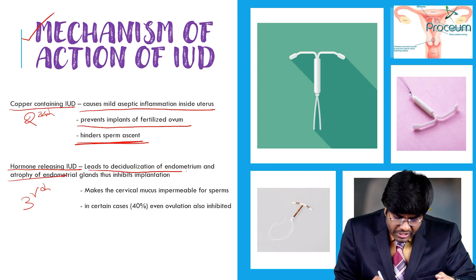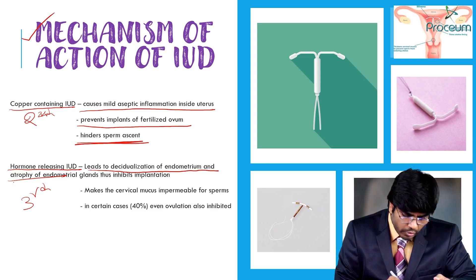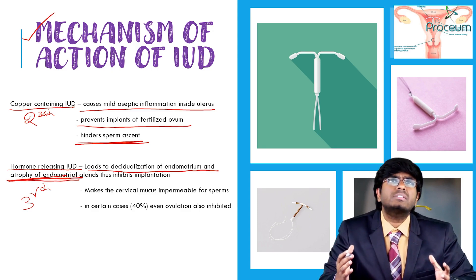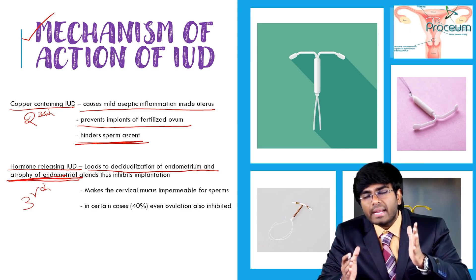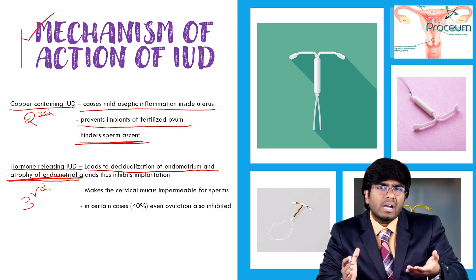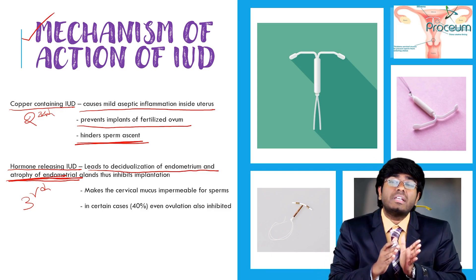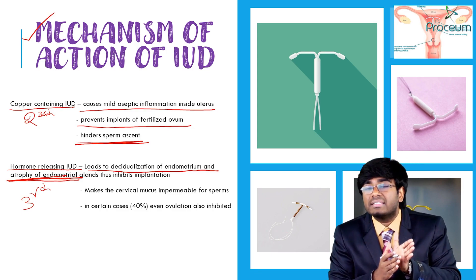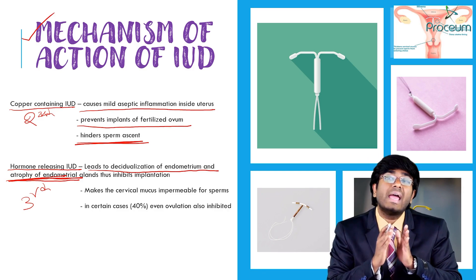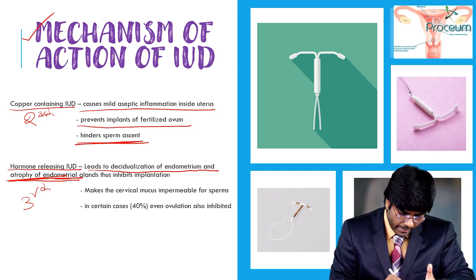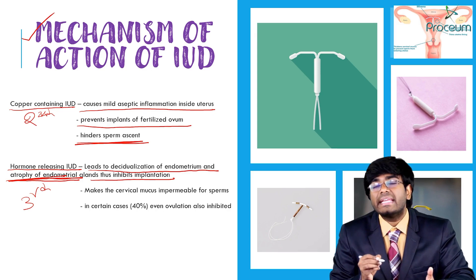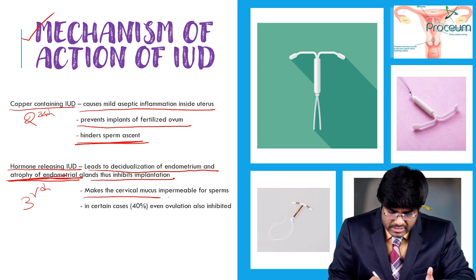Hormonal IUDs release hormones — especially progesterone — which causes decidualization of the endometrium and atrophy of the endometrial glands. For implantation, the endometrium must be in a proper phase. Because of excess progesterone, the endometrium becomes out of phase, and that out-of-phase endometrium won't support implantation.